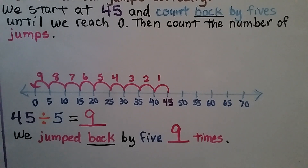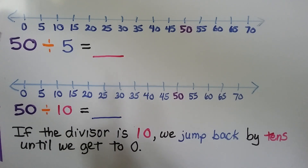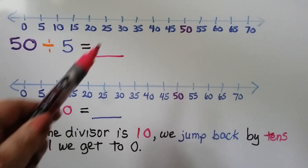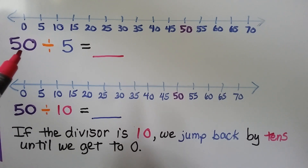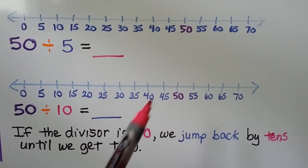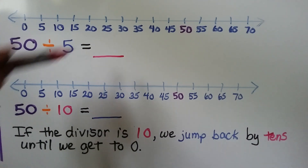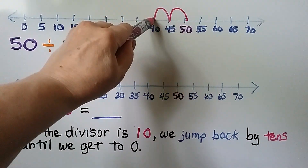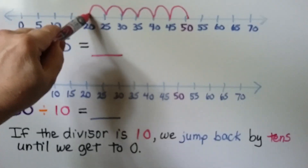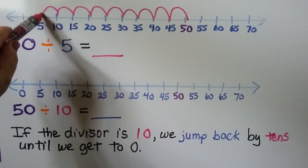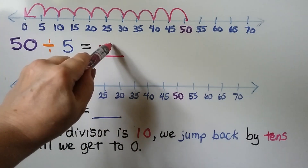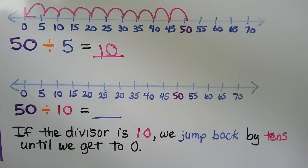Here we have a number line with a scale going in increments of 5, and our problem is 50 divided by 5. We start at 50 on our number line and skip back by fives until we get to 0: 1, 2, 3, 4, 5, 6, 7, 8, 9, 10. We made 10 jumps, so 50 divided by 5 is equal to 10.